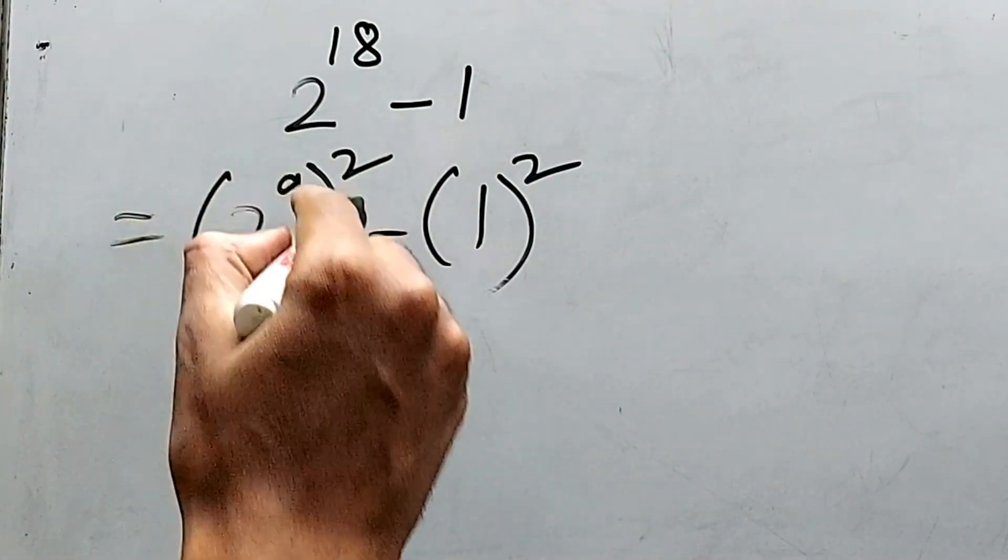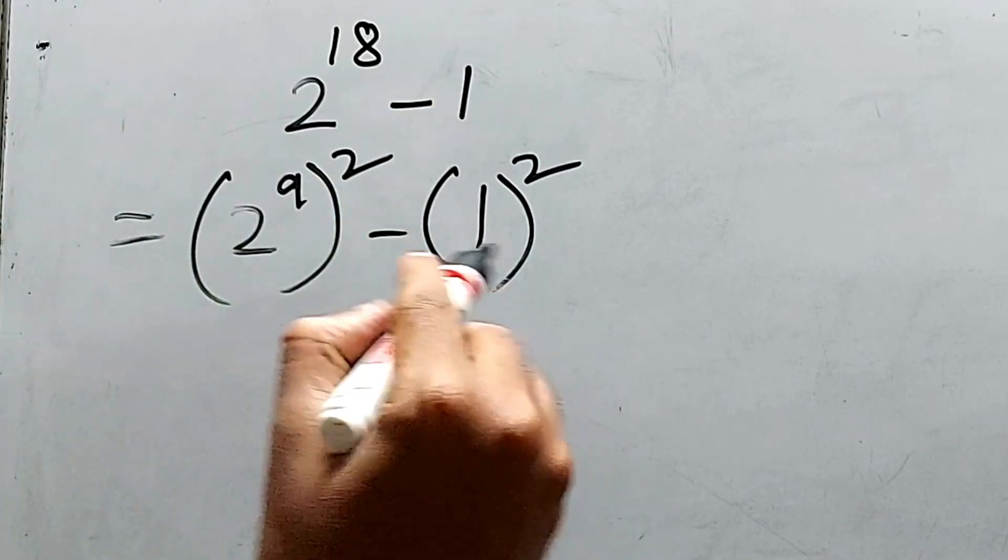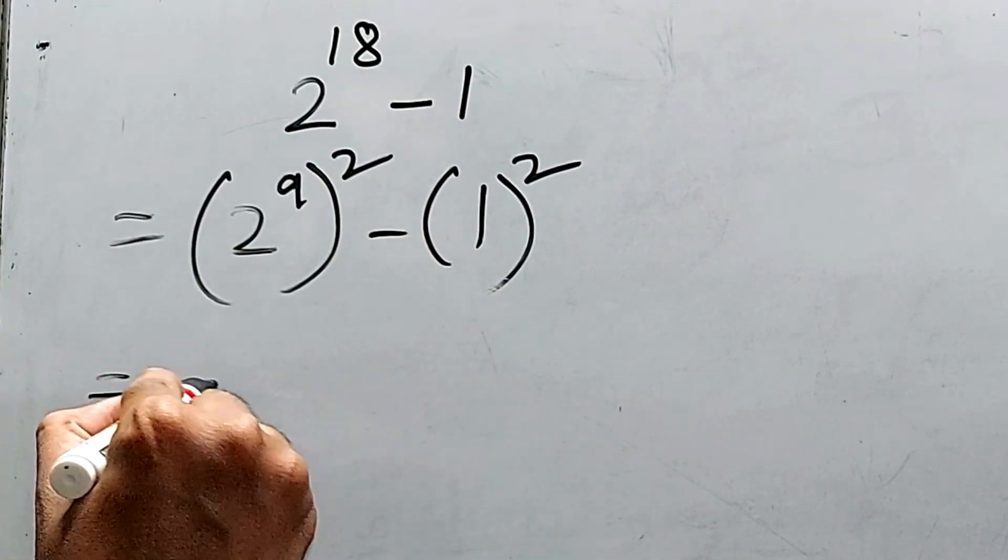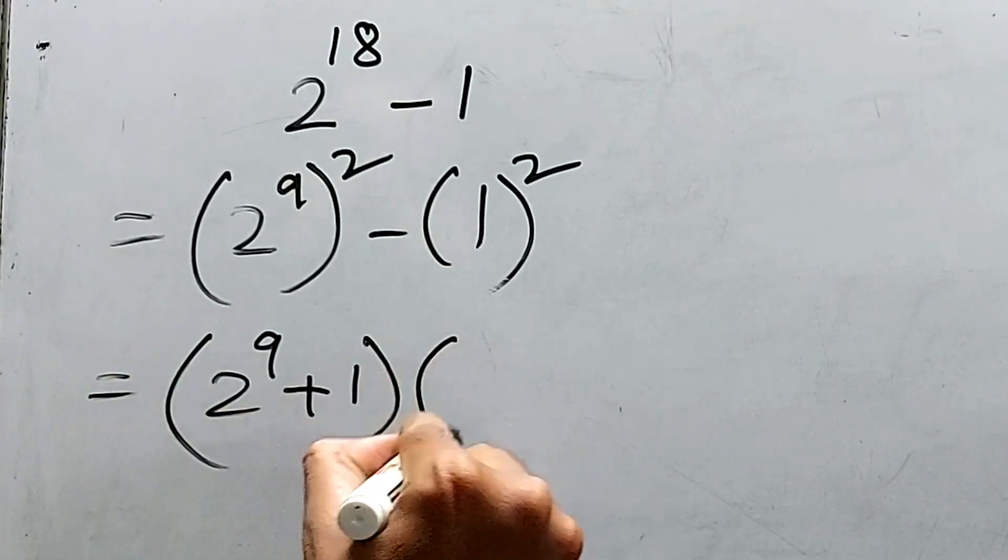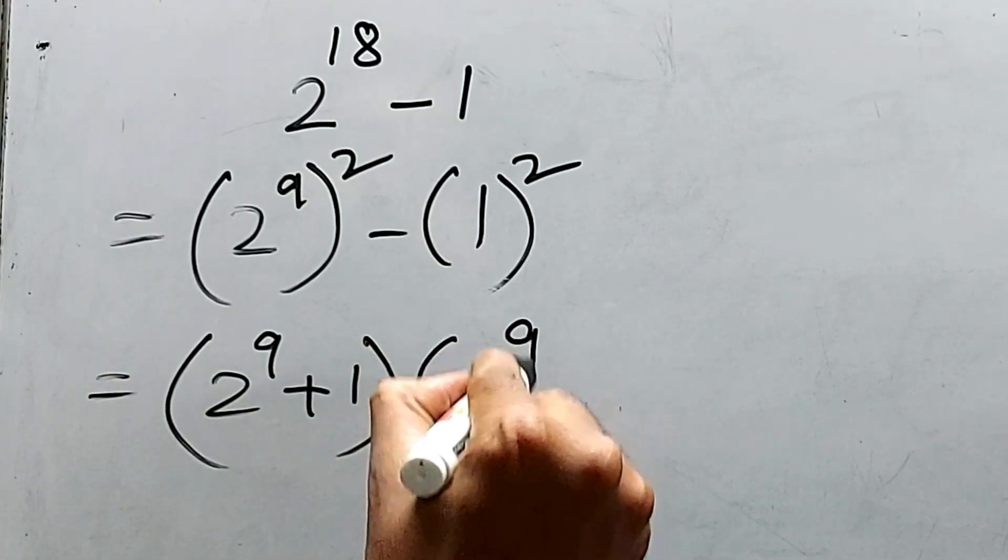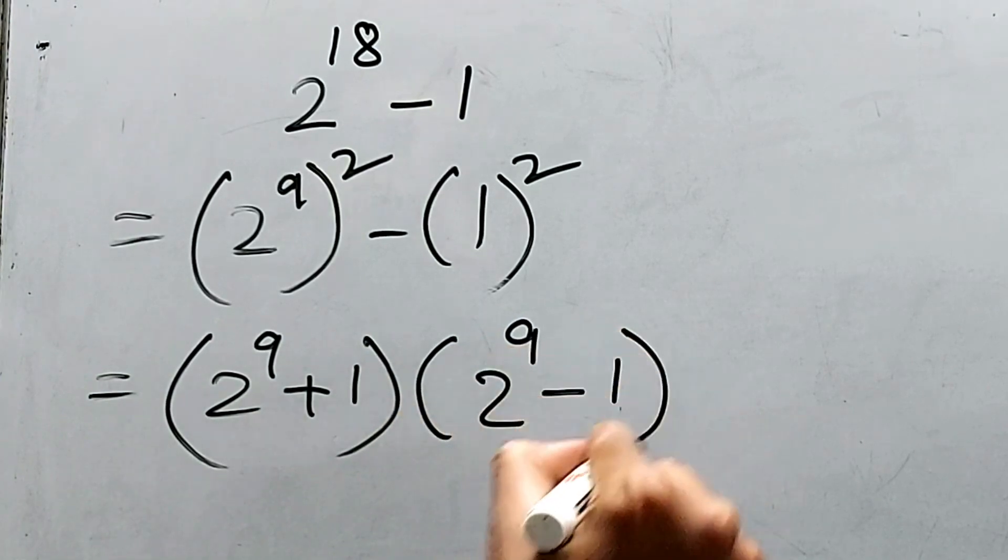We know the formula of a square minus b square, that is a plus b into a minus b. Therefore, 2 to the power 9 plus 1 into 2 to the power 9 minus 1.